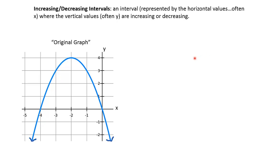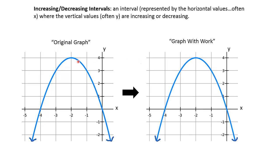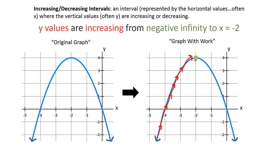Now let's check out some increasing and decreasing intervals. We have our original graph here, and we want to show where the interval of increasing happens. You can see right here where that red line was drawn — as we go from our left to the right, we're increasing. That stops at about an x-value of negative 2. So we can say the y-values are increasing from negative infinity to x equals negative 2, and you can write that in interval notation like this.